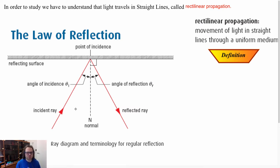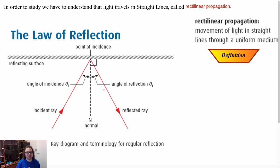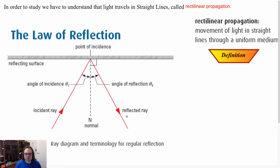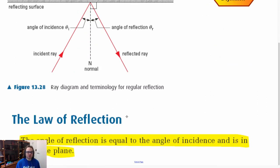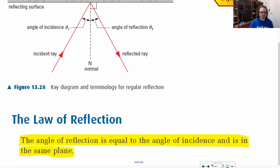If I have a hockey puck and I shoot it against the boards on a straight board, I know exactly the angle it's going to bounce off. If I throw a bouncy ball, I know exactly how it should bounce and which direction it will go on a flat surface, because we know the angle of incidence must equal the angle of reflection. But that's for a particle — light works very much in the same way. The law of reflection states the angle of reflection is equal to the angle of incidence and is in the same plane.